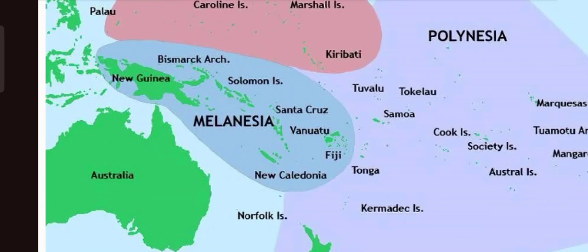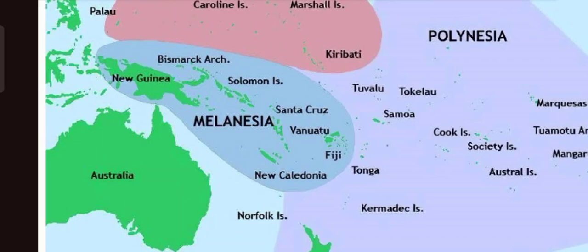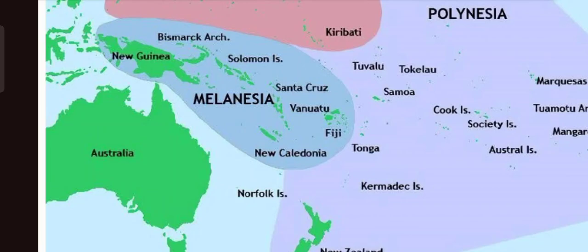Now let us come to Melanesia. The sequence is: first New Guinea, then Bismarck Archipelago, then Solomon Islands, then Vanuatu Islands — with Santa Cruz islands in between — then Fiji Islands, and finally New Caledonia Island.